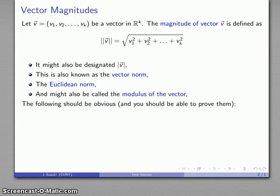Now, we have a few important properties of vector magnitudes. It should be fairly obvious, and you should be able to prove them fairly easily. If I take the scalar multiple of a vector, then the norm of that scalar multiplied vector is going to be the absolute value of that real number times the norm of the vector.